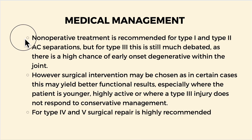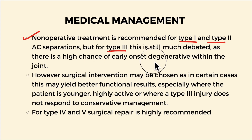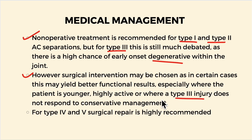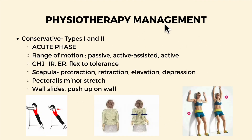Looking at medical management: non-operative treatment is recommended for grade one and grade two acromioclavicular joint separations. For grade three, this is still much debated, as there is a high chance of early onset of degeneration within the joint. However, surgical intervention may be chosen in certain cases — particularly when the patient is younger, highly active, or where a grade three injury does not respond to conservative management. For grade four and five, surgical repair is highly recommended.